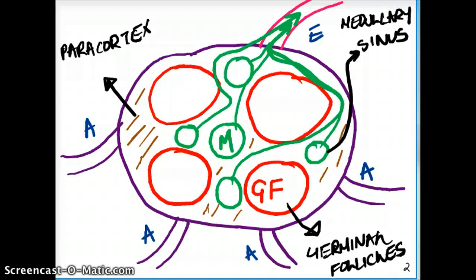In the medullary sinuses. So you're going to see not much of germinal follicles or paracortex. You're going to see just medullary sinuses in SCID. Now that is a basic premise of a lymph node.